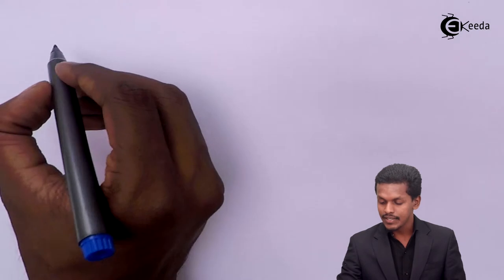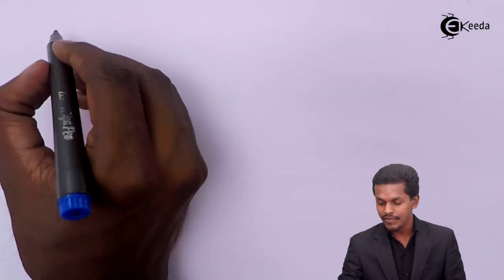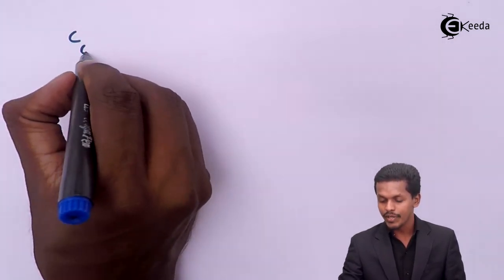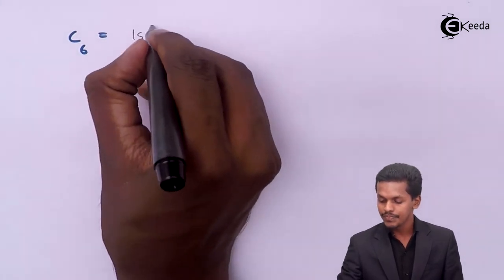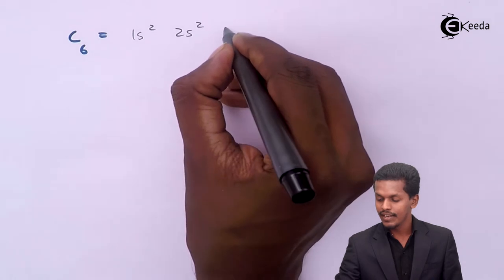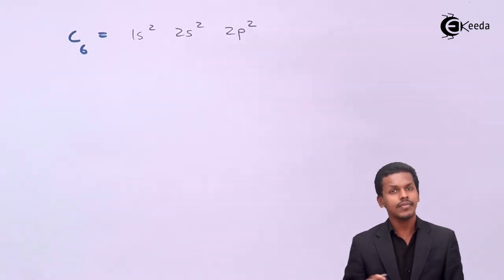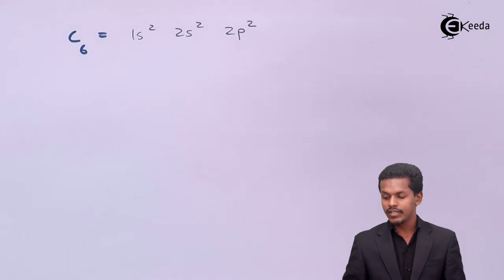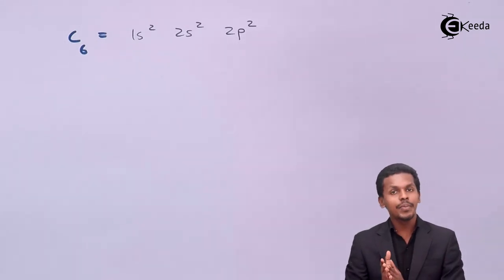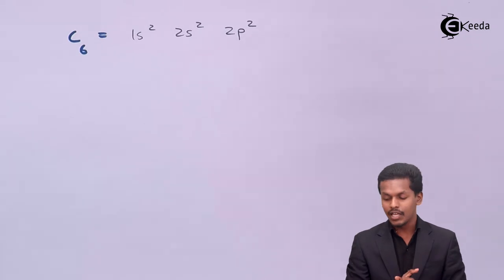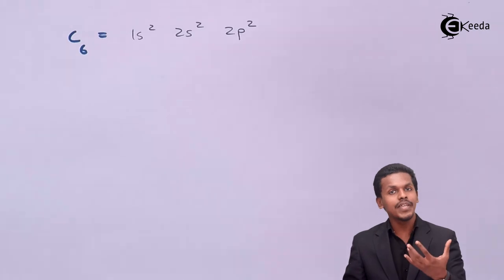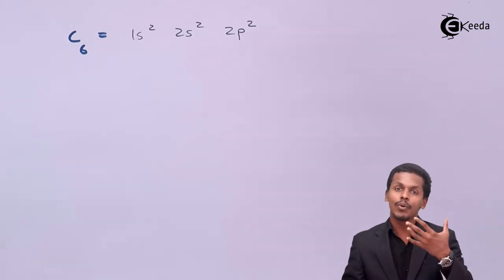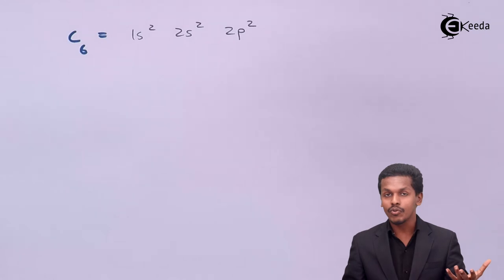Talking about carbon, which has an atomic number of 6, its electron configuration is 1s², 2s², 2p². The 2p orbital of carbon takes part in hybridization, and this 2p orbital of carbon overlaps with the p orbital of the halogen.